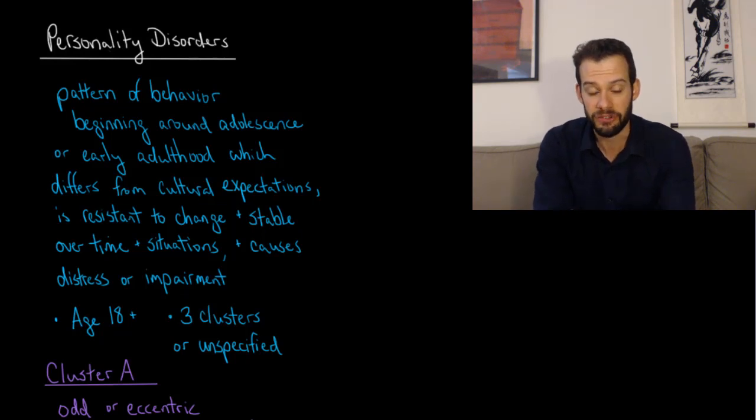If a person has certain traits and behaviors that match that description then they might be diagnosed with a personality disorder, and in order to receive that diagnosis they need to be at least 18 years old. Personality is seen as a bit more malleable or changing before that time, so you wouldn't get a diagnosis of a personality disorder in childhood. After the age of 18 you might get this diagnosis and the diagnosis would then fall into one of three clusters: cluster A, cluster B, and cluster C.